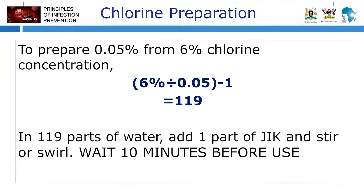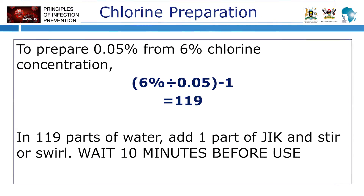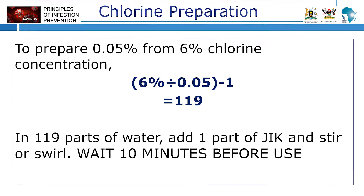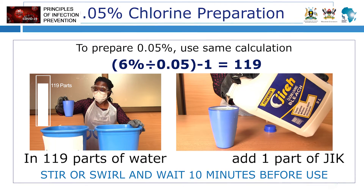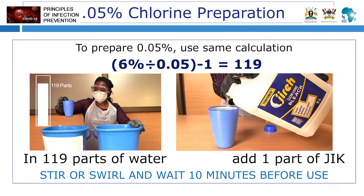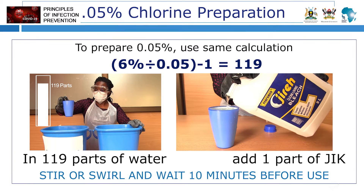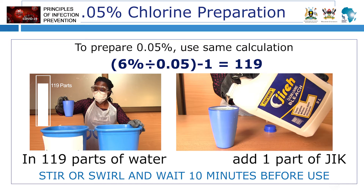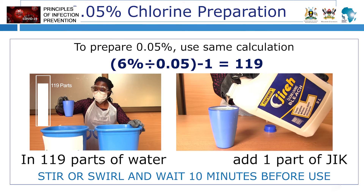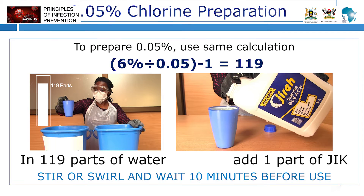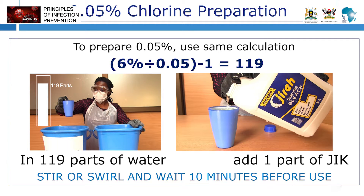To prepare 0.05% from 6% chlorine solution, we use the same calculation and divide 6% by 0.05. The answer is 119, implying that we add one part of jik to 119 parts of water. Be sure to use the same size of instruments — cups, jugs, or measuring cylinders.